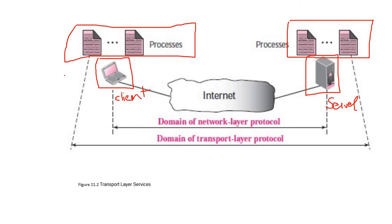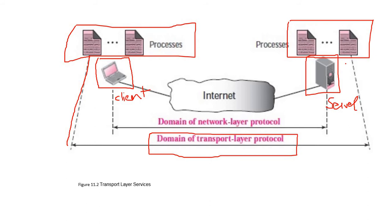These processes are available in the client's computer system, while these other processes are available in the server's computer system. Client processes are communicating with server processes. The entire connectivity produced by the transport layer - from one process to another process - is produced by the transport layer. Whereas when you consider connectivity from one system to another system, that is the responsibility of the network layer, which produces connectivity through IP addresses - system to system.